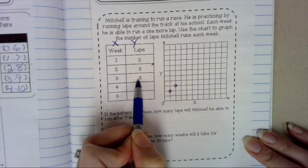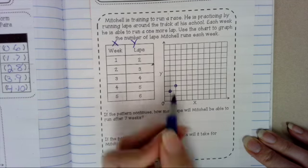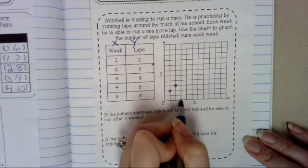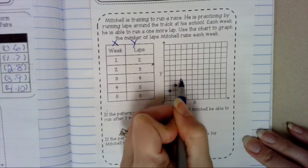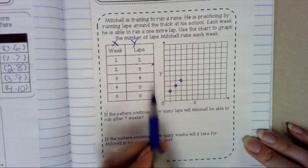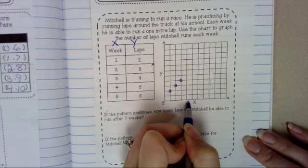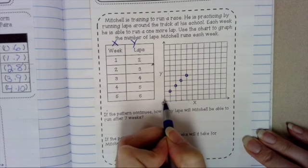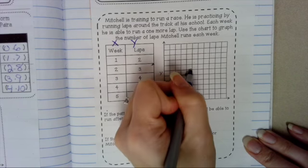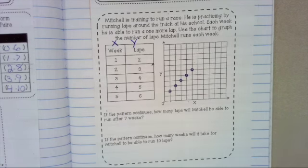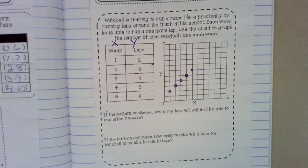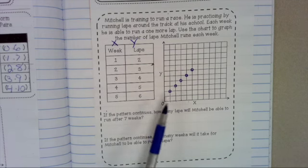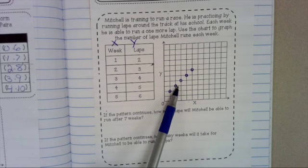3, 4. 3 weeks, 4 laps. We're going to go right 3. Up 4. Week 4, 5 laps. We're going to go right 4. Up 5. And then, lastly, we're going to go right 5 and up 6. So we have a pattern very similar to our previous pattern. Every time he goes another week, he increases laps.